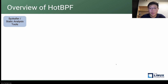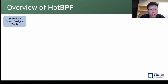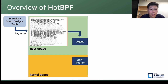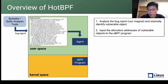Now let's take an overview of the HUD-BPF design. The input is bug reports generated by dynamic fuzzing tools like Syzkaller and other static analysis tools. When finding a bug, these tools generate a bug report containing useful information regarding the root cause, for example the stack call trace. HUD-BPF runs an agent in user space and a BPF program in kernel space. In user space, the agent analyzes the bug report and uses the call stack to identify vulnerable objects. If the bug is a buffer overflow, the vulnerable object contains the overflowed buffer; if the bug is use-after-free, the vulnerable object is referenced by the dangling pointer.